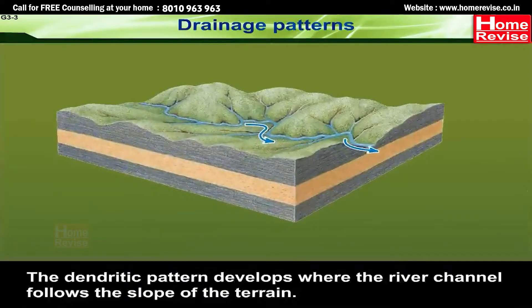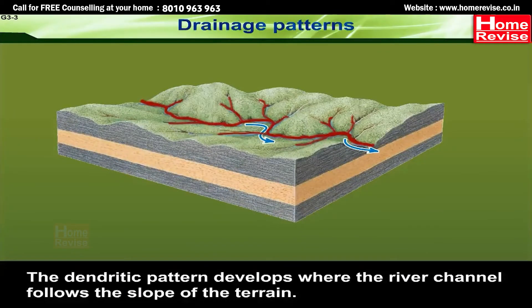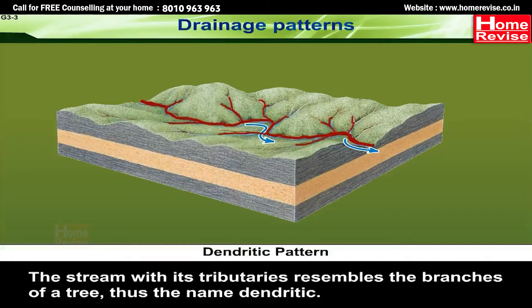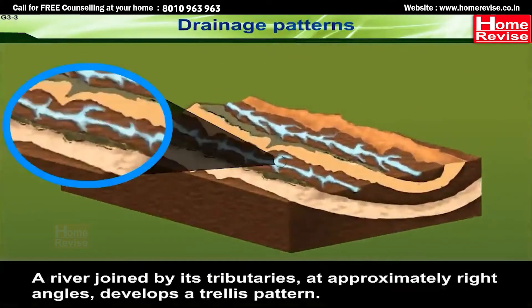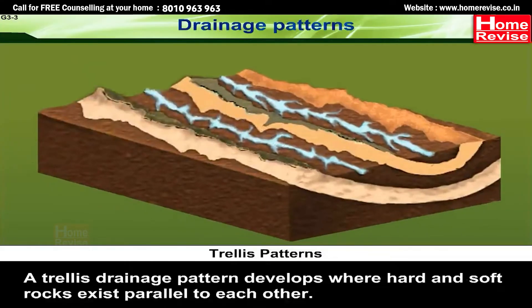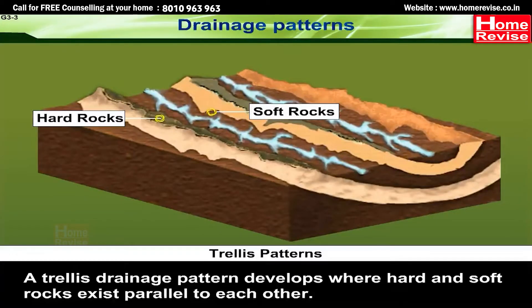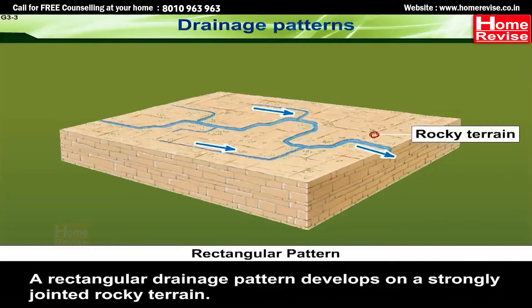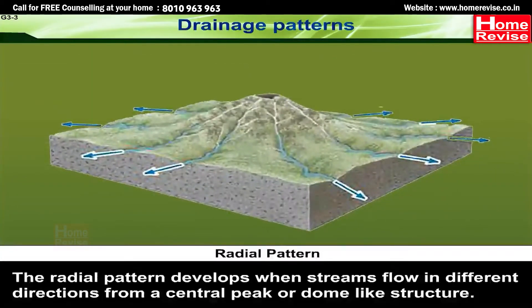The dendritic pattern develops where the river channel follows the slope of the terrain. The stream with its tributaries resembles the branches of a tree, hence the name dendritic. A river joined by its tributaries at approximately right angles develops a trellis pattern, which forms where hard and soft rocks exist parallel to each other. A rectangular drainage pattern develops on a strongly jointed rocky terrain. The radial pattern develops when streams flow in different directions from a central peak or dome-like structure.